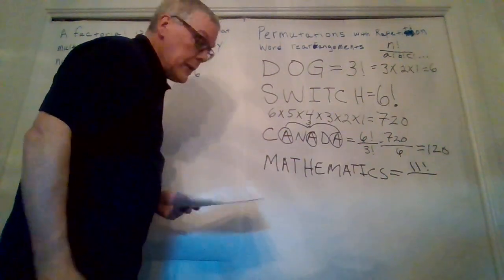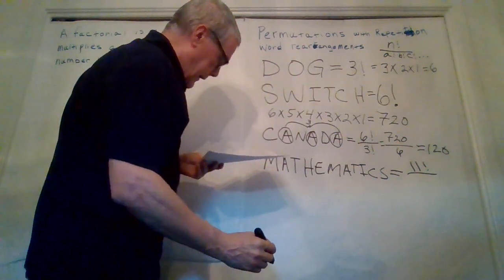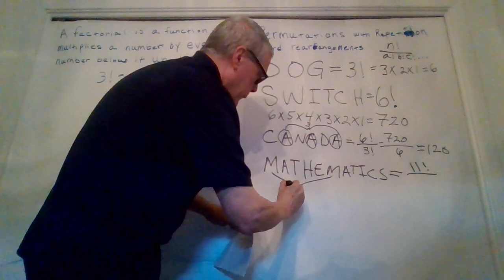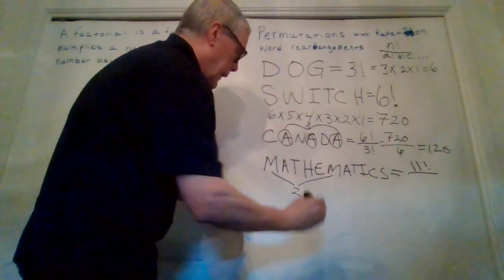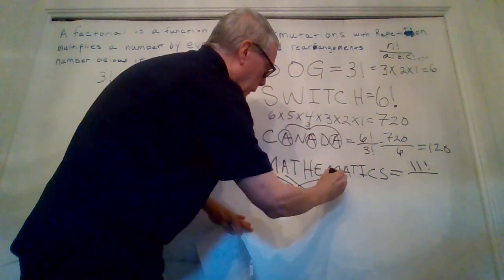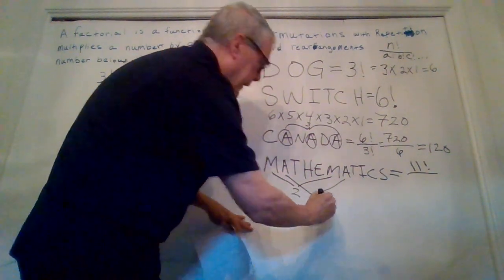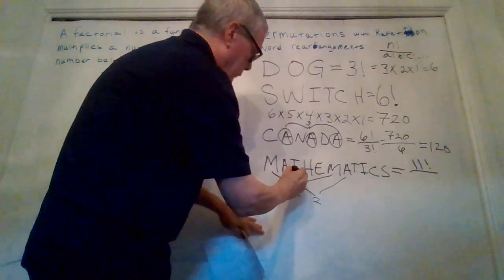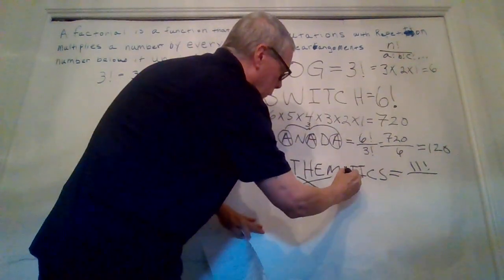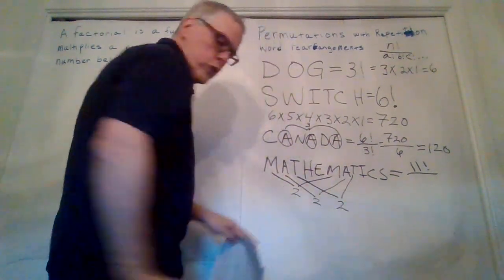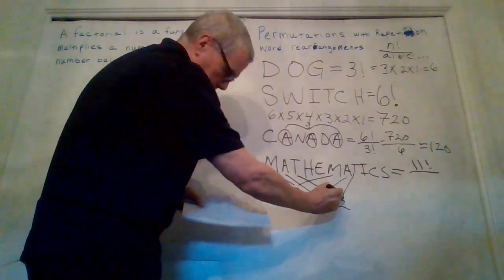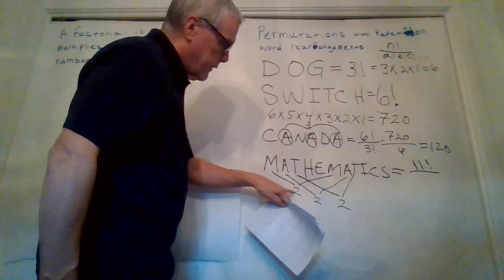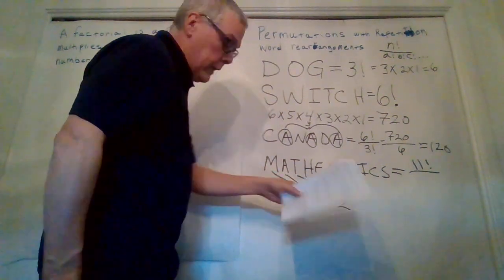How many repeated letters do we have? Let's see. We have two M's. We have two A's. And we have two T's. So we've got two of each repeated letters.